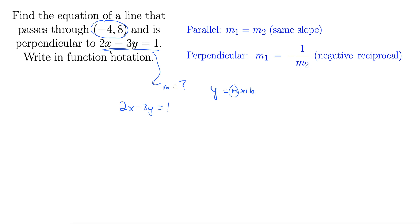We solve this for y to get negative 3y, subtracting 2x from both sides, equals negative 2x plus 1. Now divide both sides by negative 3, y equals positive 2 thirds x minus 1 third. So here's the slope that we're looking at, 2 thirds.